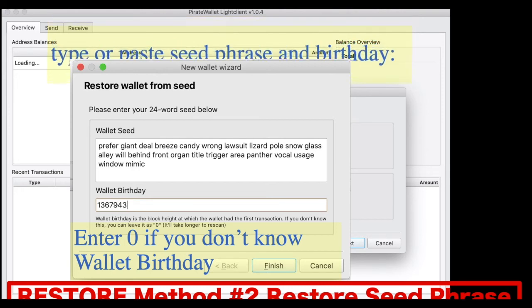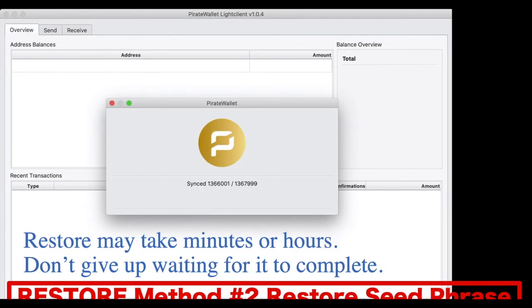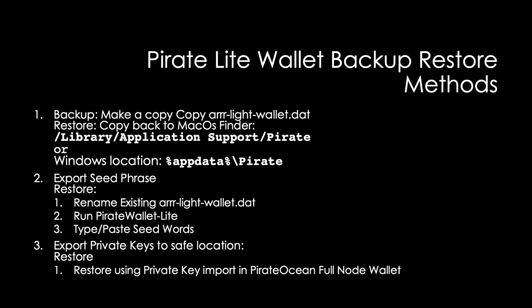In summary: for the first backup method, make a copy of the arr-light-wallet.dat. To restore it, copy it back to the source location — on Mac it is Library/Application Support/Pirate under your user directory, or on Windows go to Start > Run, type %appdata%\Pirate, and it takes you to a directory with the same files. The second method: export your seed phrase. To restore, rename your existing arr-light-wallet.dat, run the Pirate Wallet Light application, choose restore from seed words, provide your seed words and birthday or zero, and let it search the blockchain.